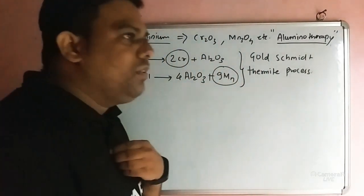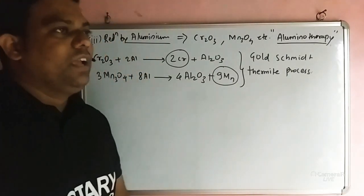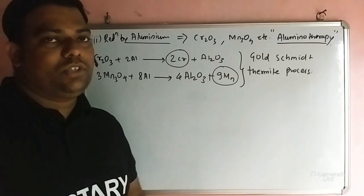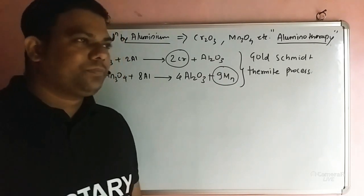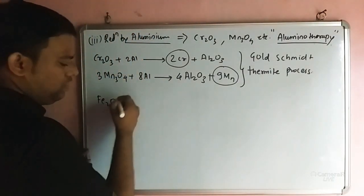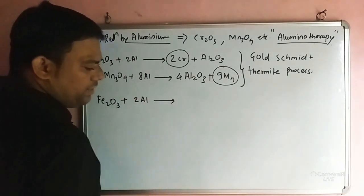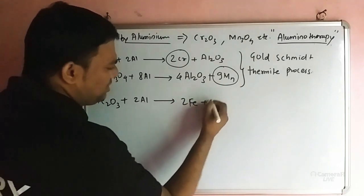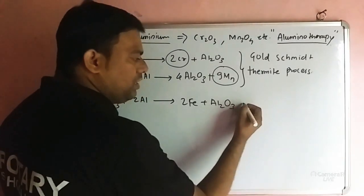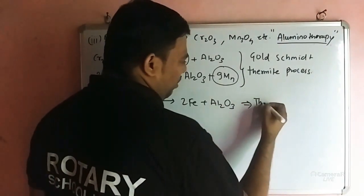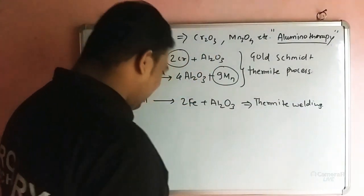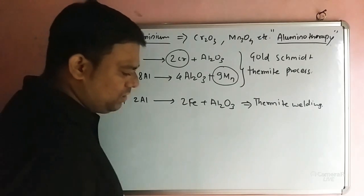Regarding aluminium, in the extraction using ferric oxide (Fe2O3): Fe2O3 + 2Al gives 2Fe + Al2O3. This reaction is called thermite welding, and it is used for joining railway tracks.